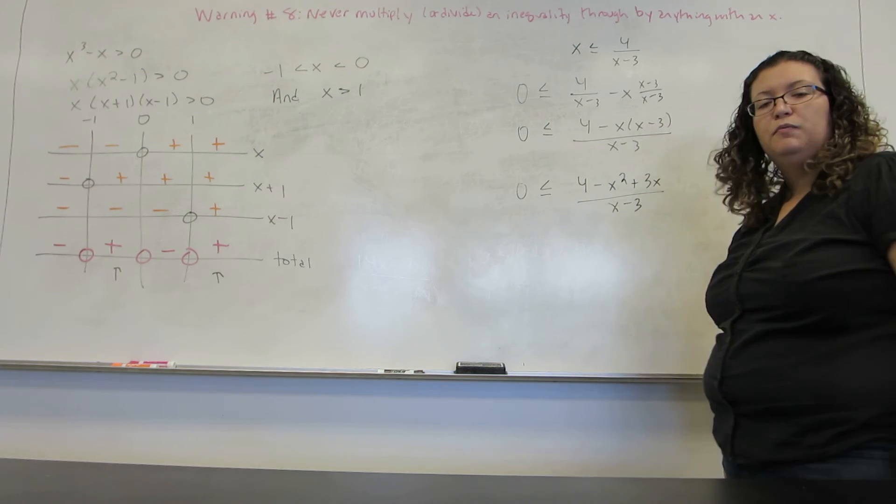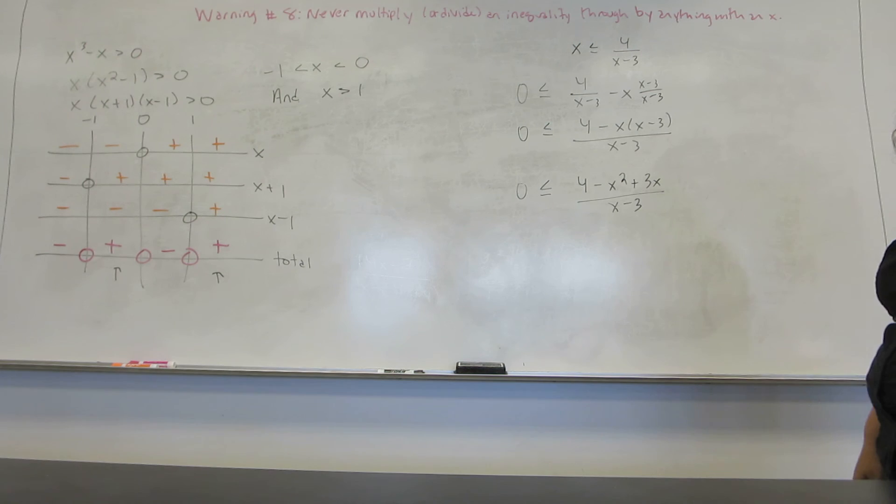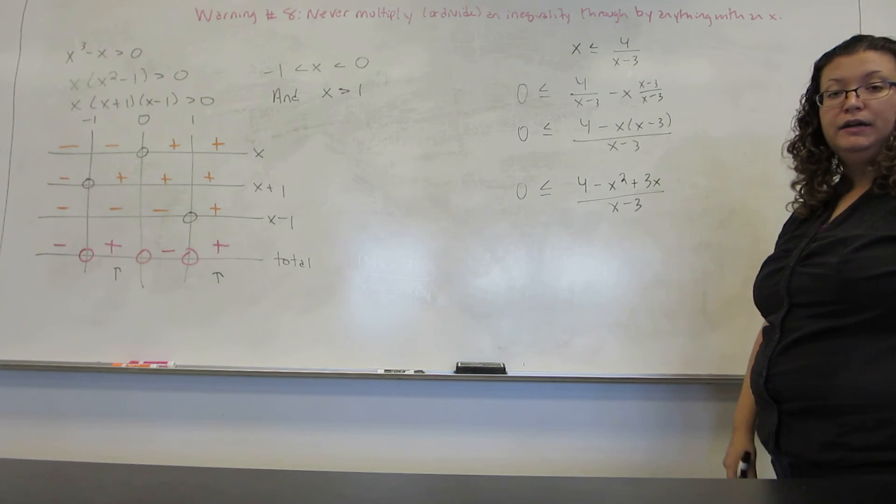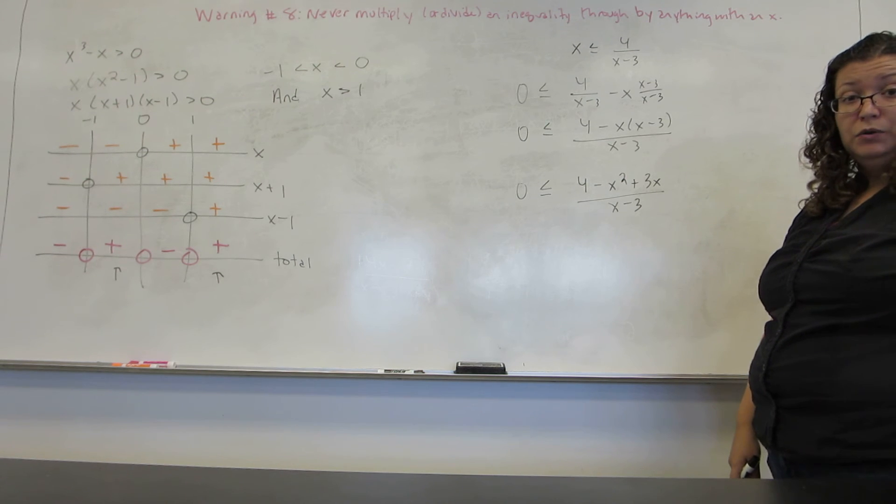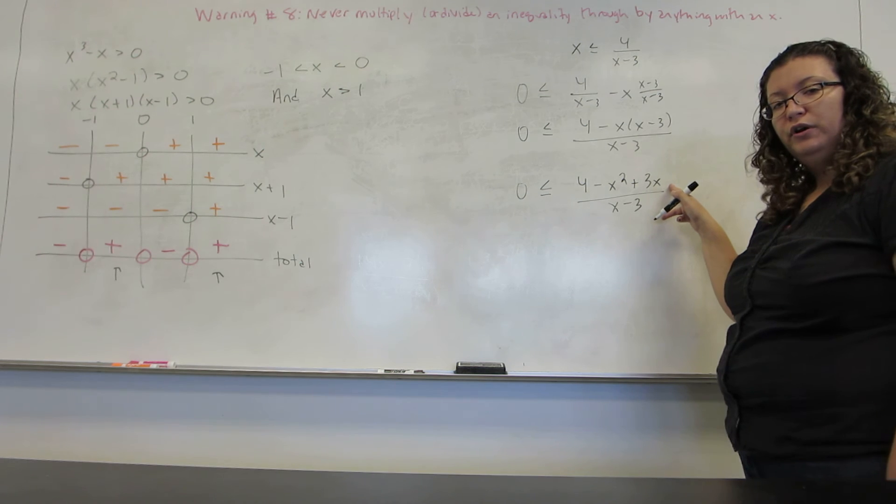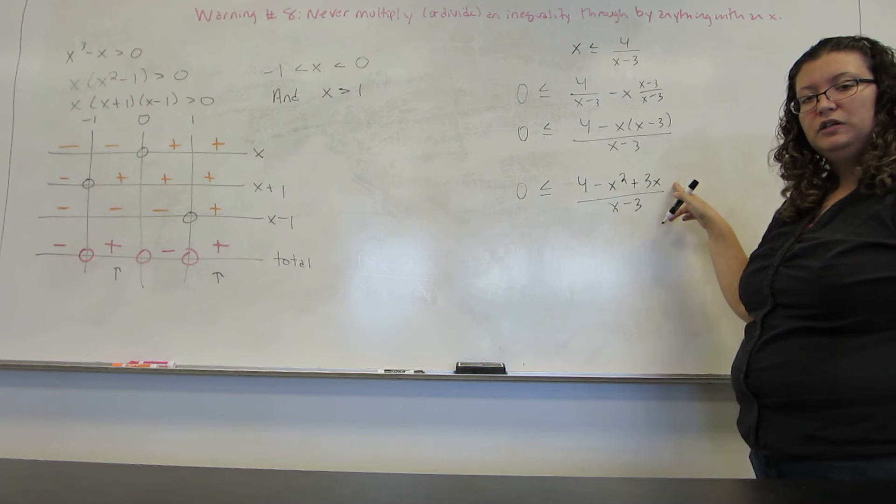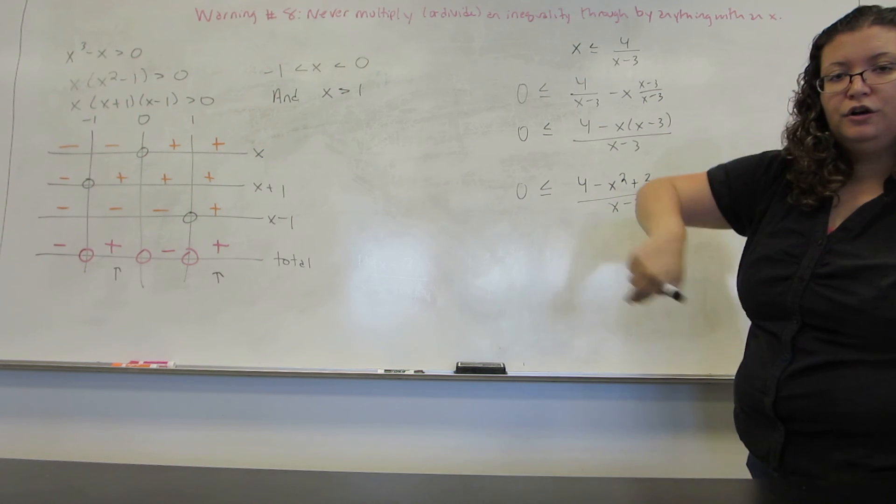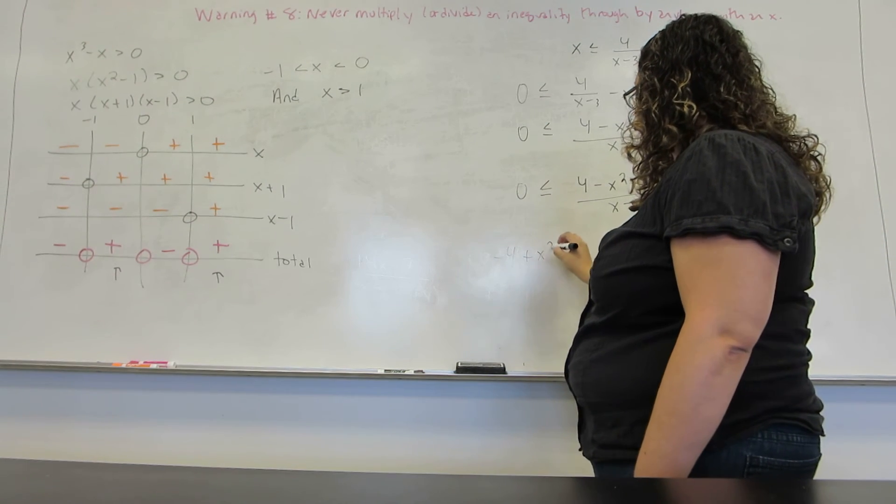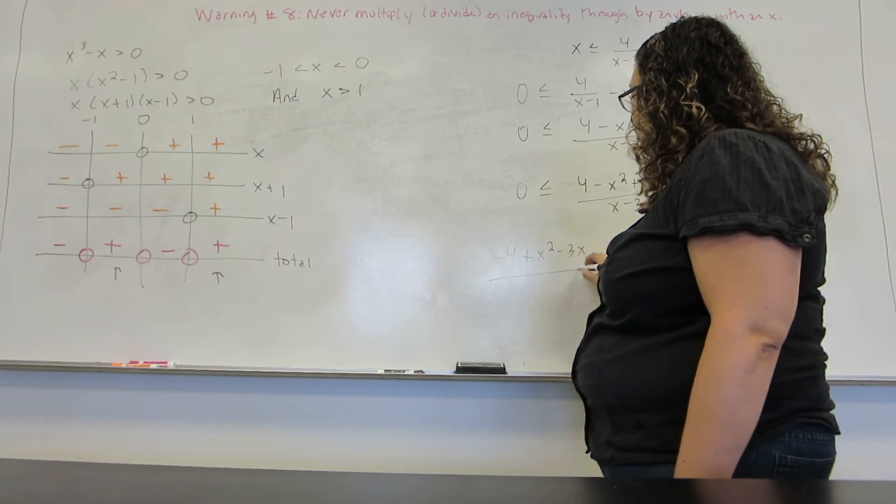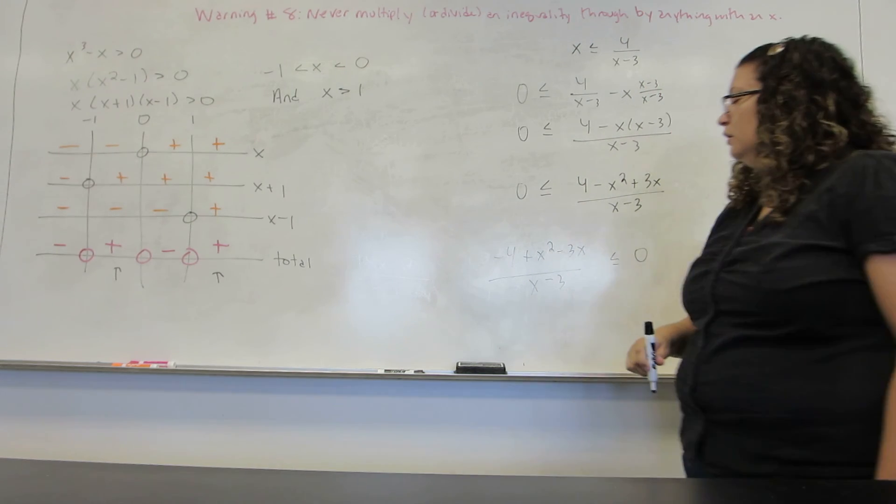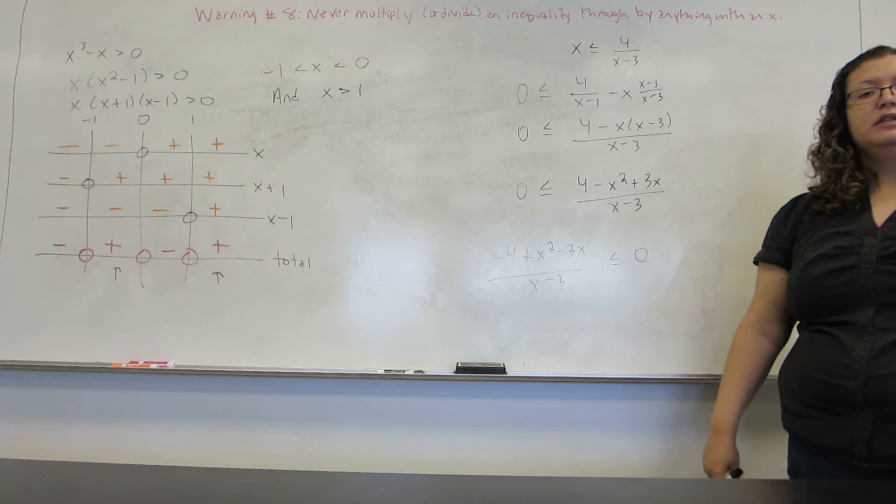Now the next step would be to try to factor this, but we've run into a little bit of a problem. The X squared is negative and we don't like a negative X squared. And in fact it will cause problems with the sign chart. So before I try to factor this numerator, I'm going to guarantee that that X squared is positive by moving everything over to the other side. So when I move things over to the other side it flips all of the signs just in the numerator so that I get that positive X squared.